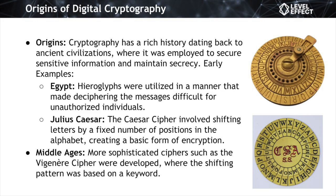Another historical example is Julius Caesar, during whose time the Caesar cipher was born. This technique involves shifting letters within the alphabet by a consistent number of positions. While simple, it laid the foundation for encryption principles. Advancing beyond that, the Middle Ages saw more complex ciphers like the Vigenère cipher from France, which used a keyword to determine the shifting pattern, adding more layers of complexity.